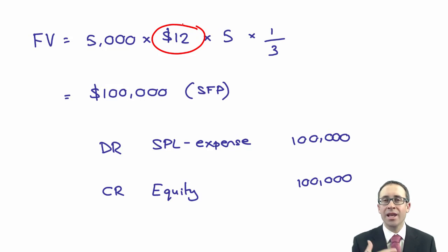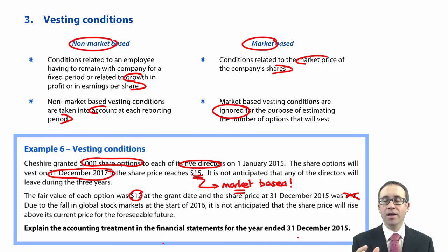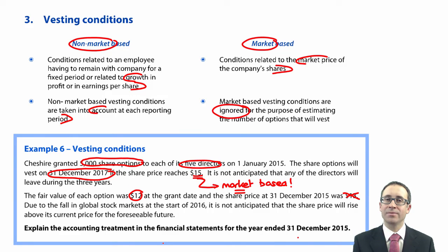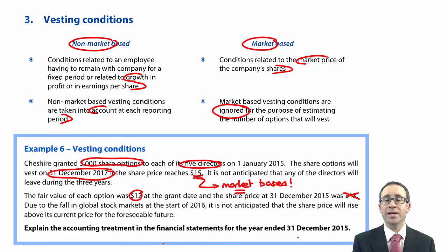That's it — it's just a little trick that the examiner has up their sleeve to try and confuse you. If you're given market-based vesting conditions, ignore them unless you are at the vesting date. If you are at the vesting date and the conditions haven't been met, then you reverse out all of the entries that you have previously processed. Other than that, there's just a small section for you to read on the scope of IFRS 2 — when we do not need to use IFRS 2 — which you can read in your own time in the textbook of your choosing.